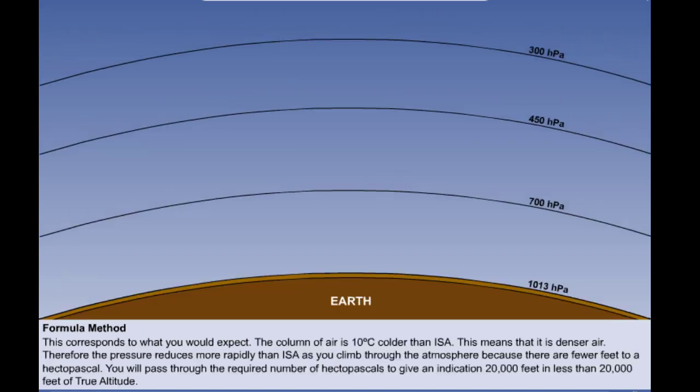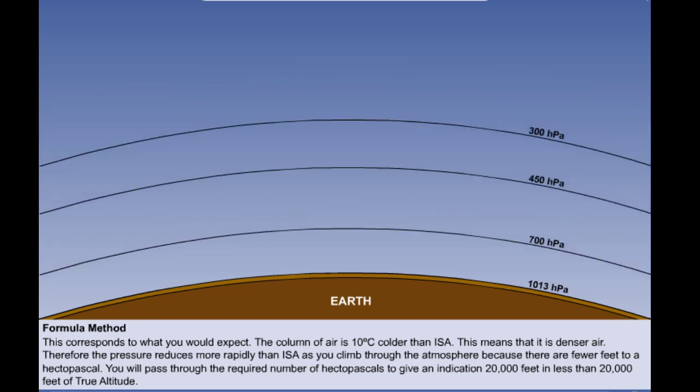This corresponds to what you would expect. The column of air is 10 degrees colder than ISA. This means that it is denser air. Therefore, the pressure reduces more rapidly than ISA as you climb through the atmosphere because there are fewer feet to a hectopascal with denser air. So you will pass through the required number of hectopascals to give an indication of 20,000 feet in less than 20,000 feet of true altitude.